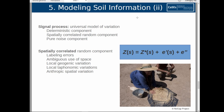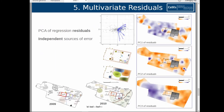Following this concept, we can try to exploit the universal model of variation, which is what universal kriging does. The key is to focus on the spatially correlated stochastic component and link that with possible errors affecting our analysis, such as labeling errors, undue use of prior assumptions, geogenic variation, and taphonomic or anthropic spatial variations. We can then plot these residuals individually, or even perform a PCA over these residuals, trying to link them with the kinds of errors we are thinking about.